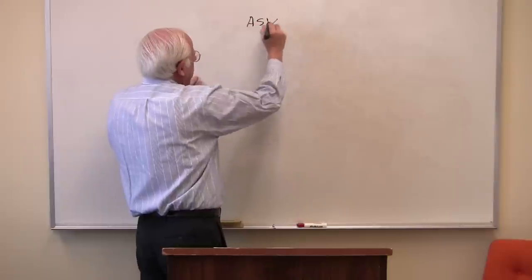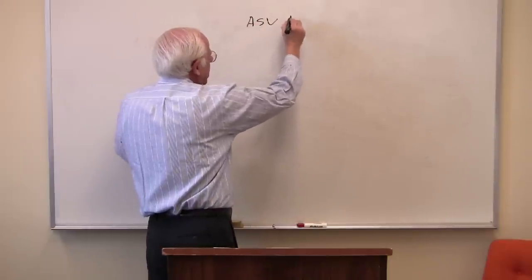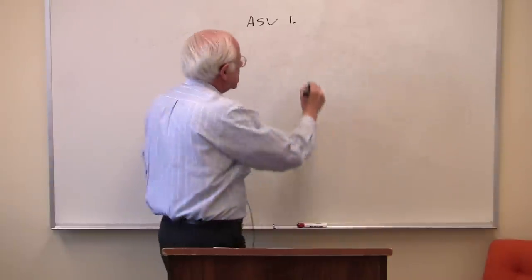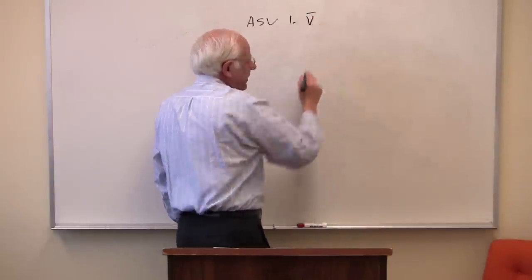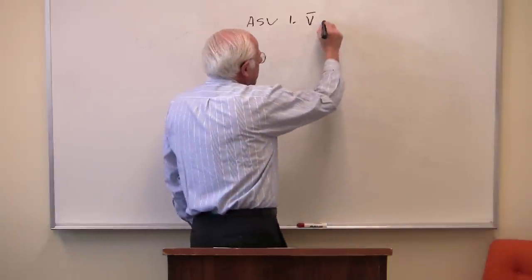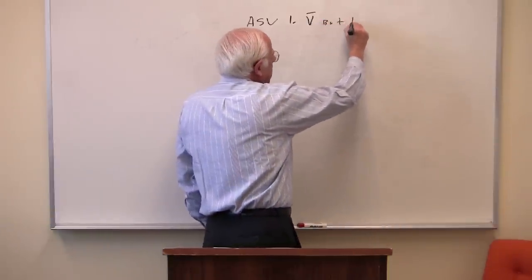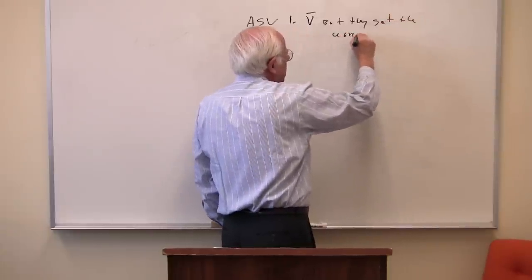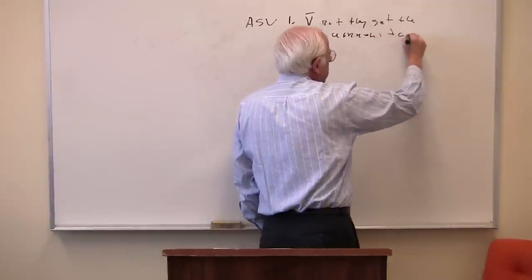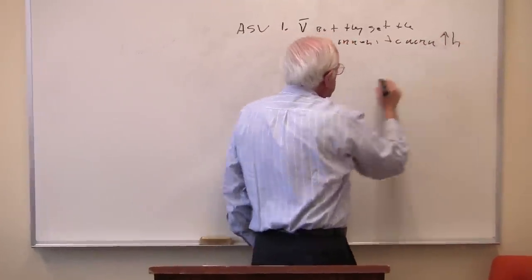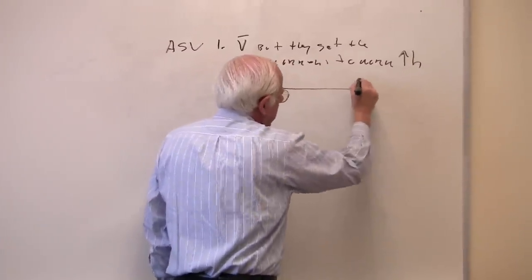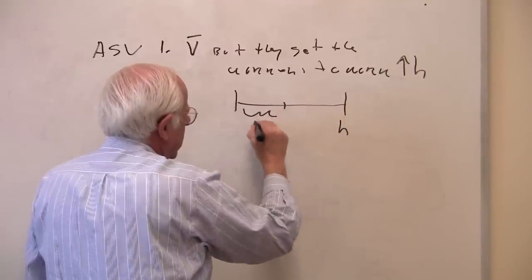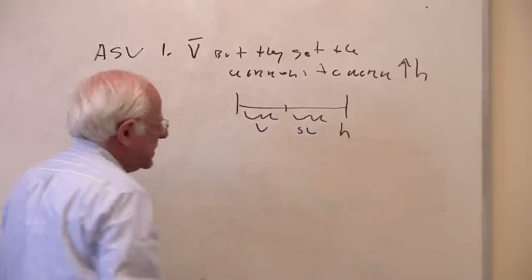Absolute surplus value — that's one way. Here, what the capitalists do is pay the workers the same value of labor power — the same labor power — but get the workers somehow to work more hours. So in a sense, you have the length of the workday, which is H. You're paying the workers a V. This is the surplus the capitalists get.